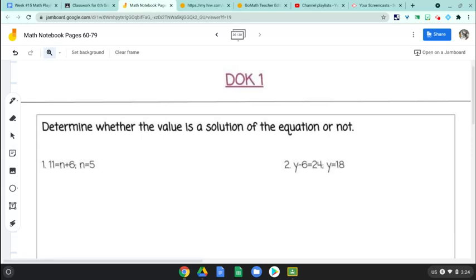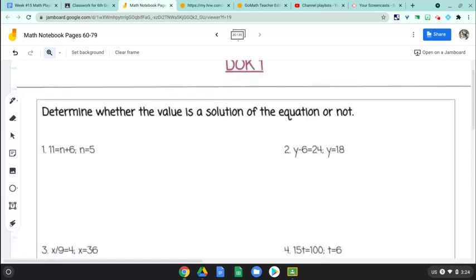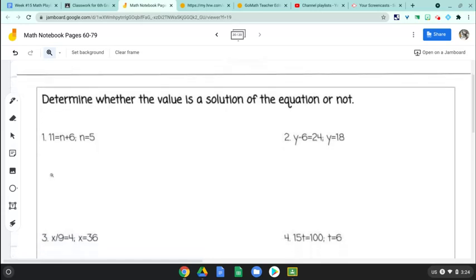At the very top of page 79, the instructions say determine whether the value is a solution of the equation or not. We've done this before except with expressions. There was always a question before about this little semicolon that's here in the middle, so we'll talk about that. I'm going to rewrite this equation down below for number one: eleven equals n plus six, and then that semicolon and n equals five. When you see this in the book, this little semicolon is just separating ideas. You might see that in a sentence as well—two ideas that are related but separate can be separated by a semicolon.